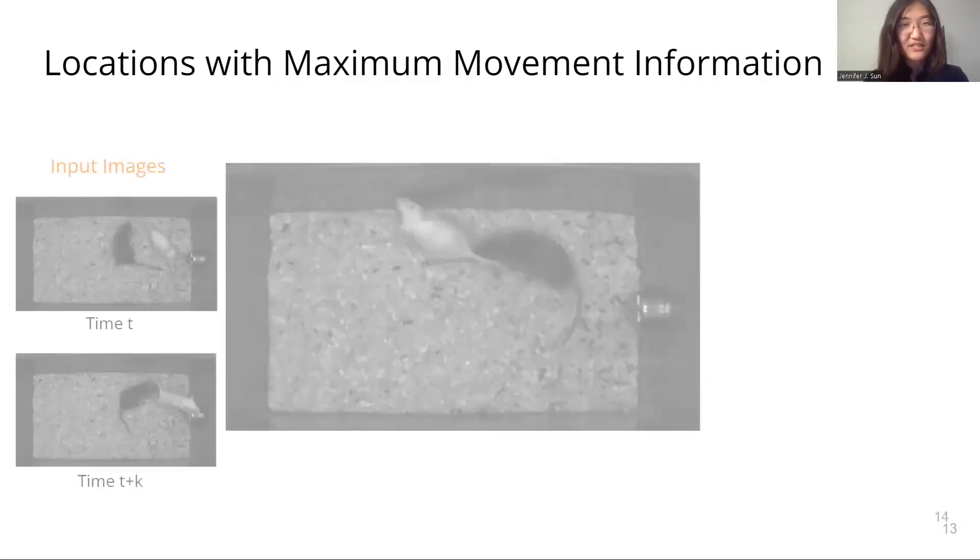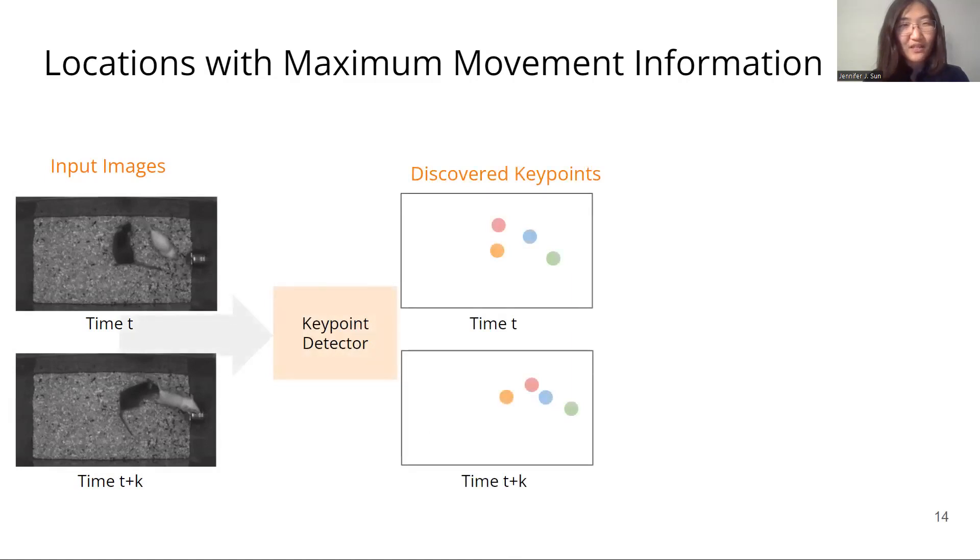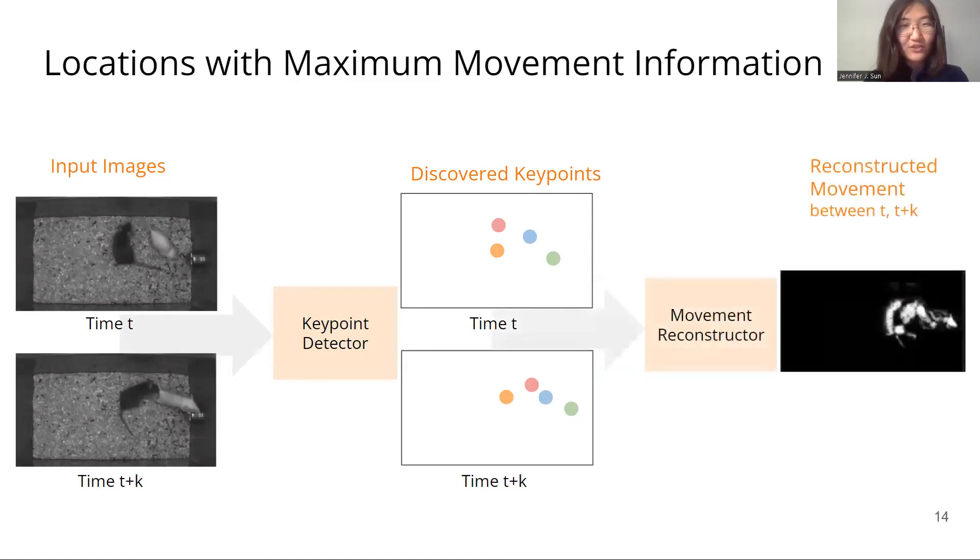BeKind learns these keypoints using self-supervision. We start with two frames in a behavioral video at time t and t plus k, and we run our keypoint discovery model on both frames. The location for each keypoint is computed using a spatial softmax for a heatmap channel. Then the keypoints go through a decoder to reconstruct movement across frames t and t plus k.